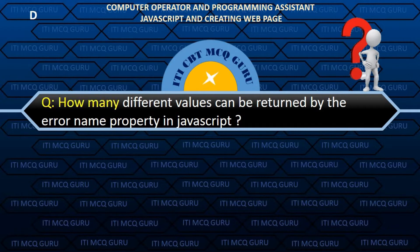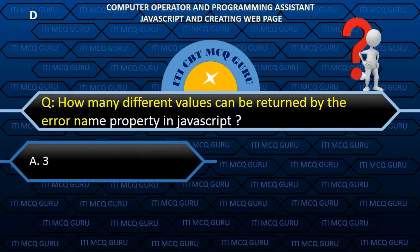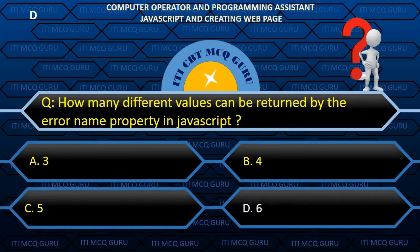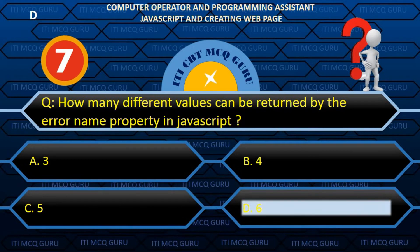How many different values can be returned by the ErrorName property in JavaScript? B. Six.